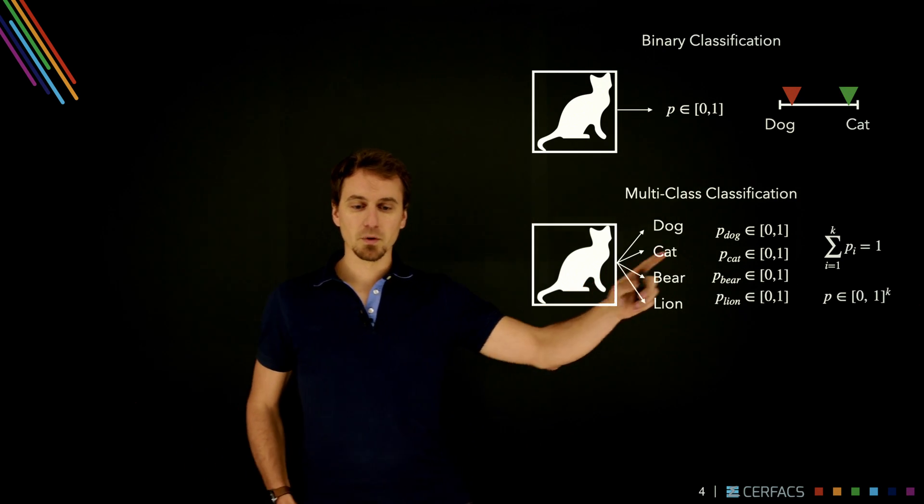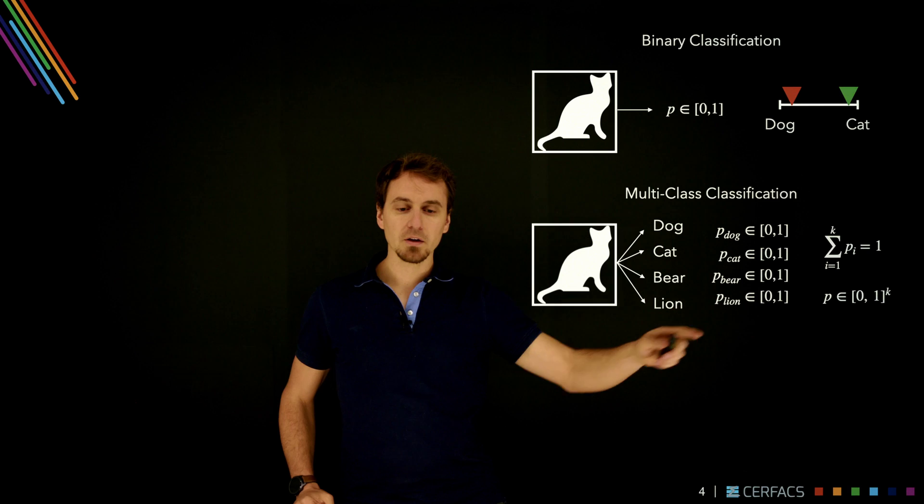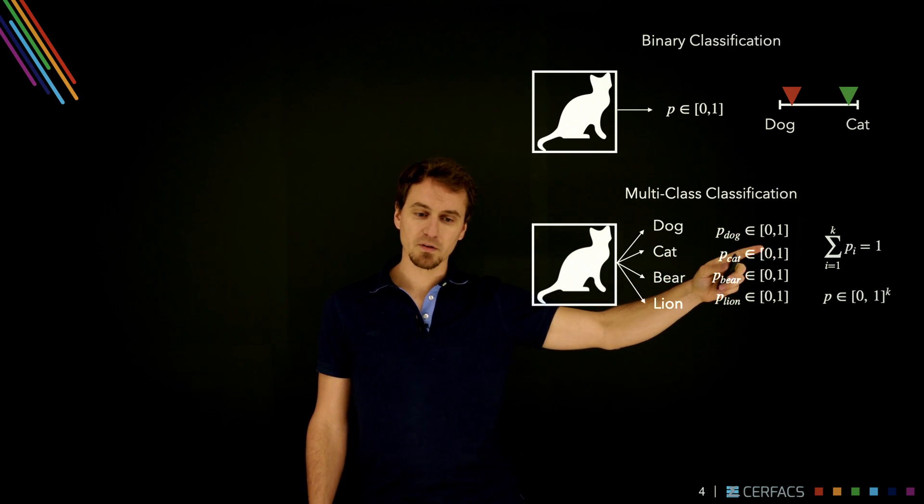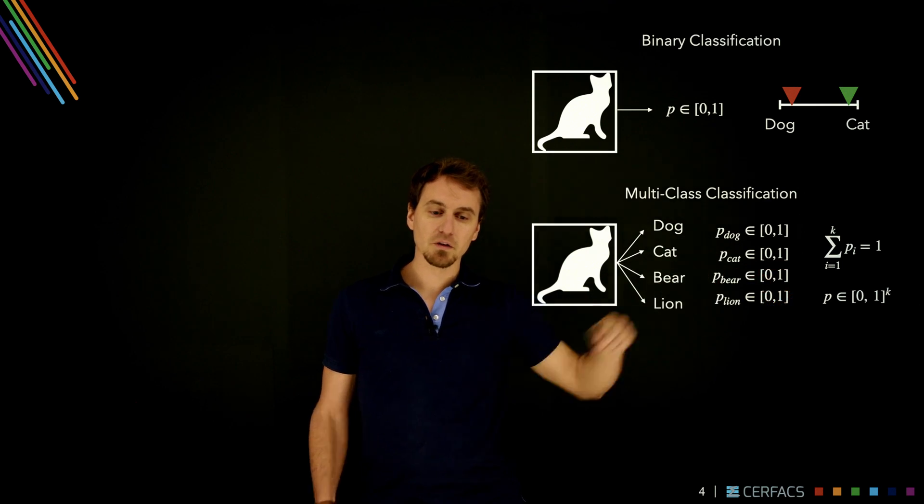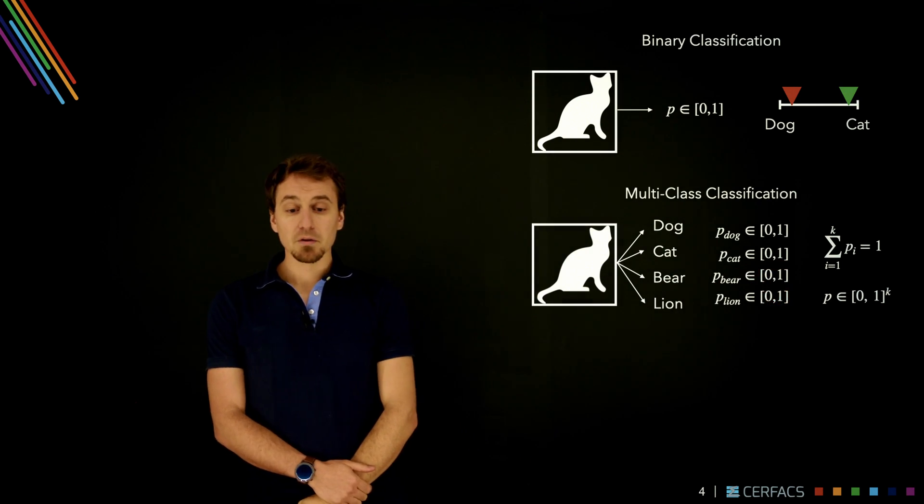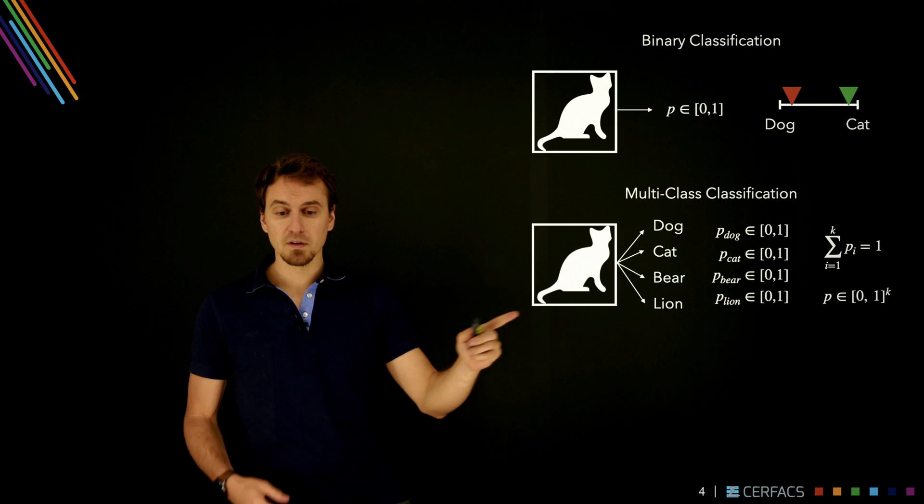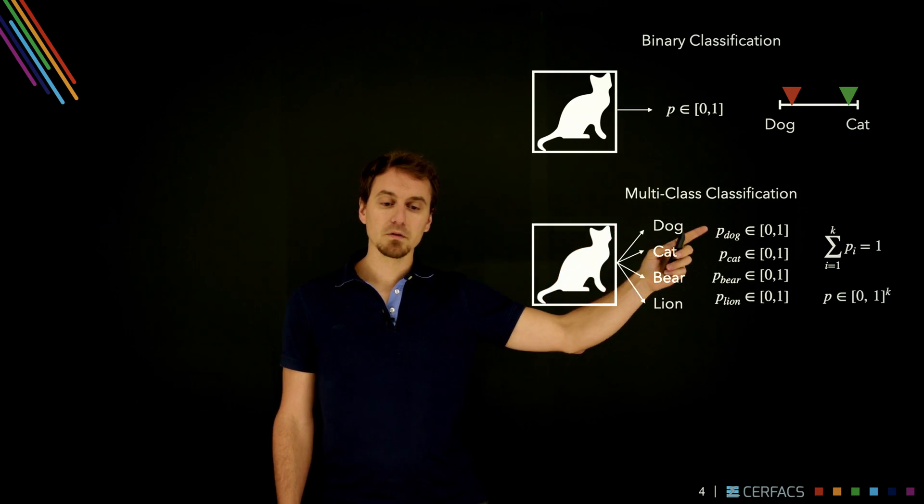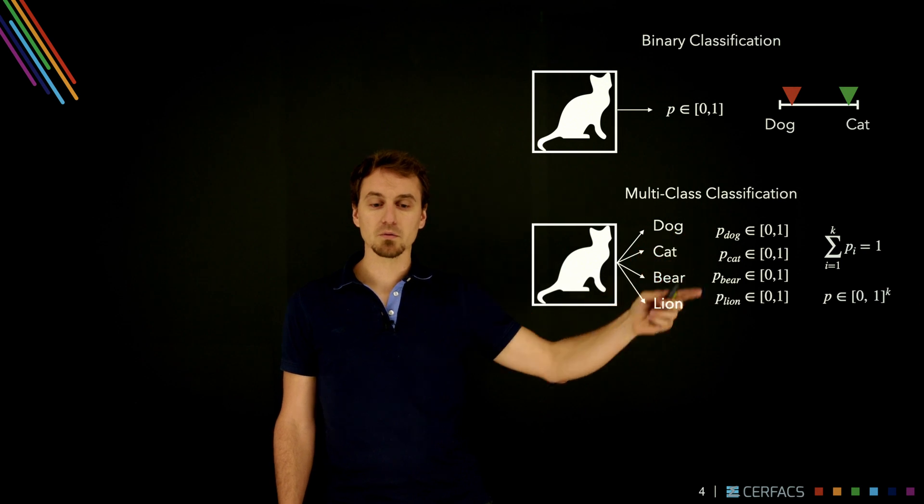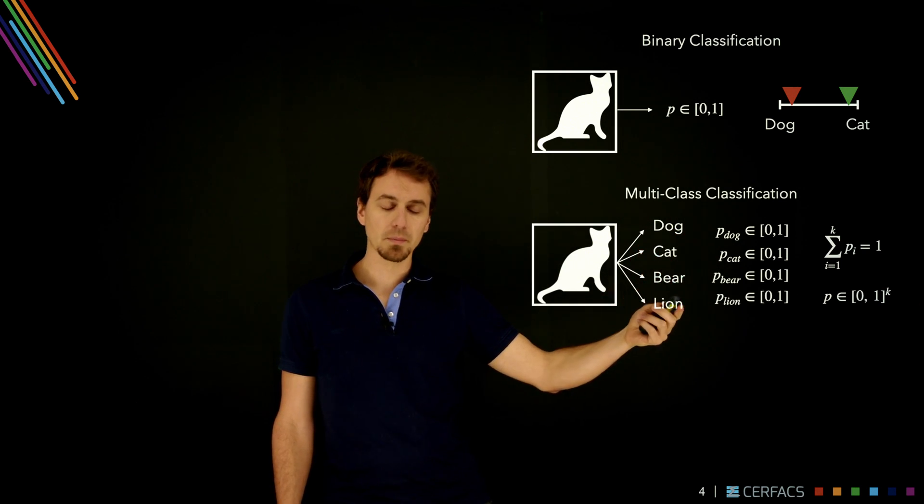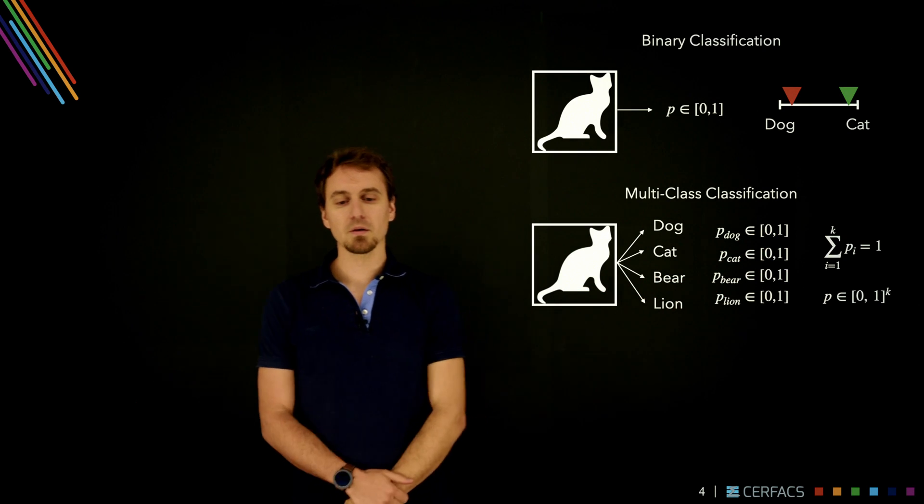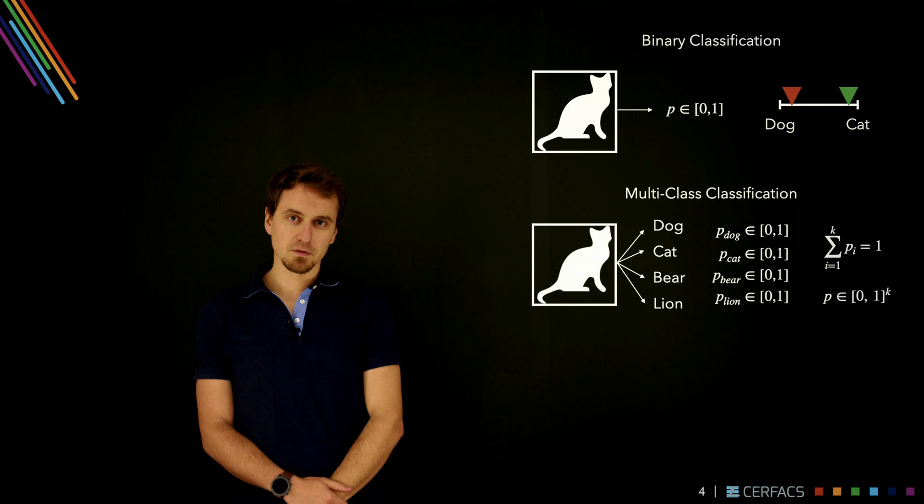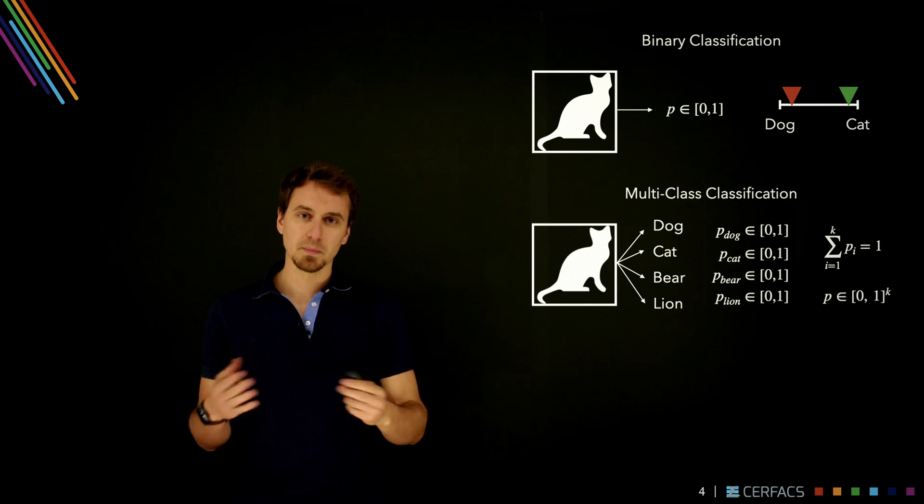Instead, we choose something where we associate one probability to each class. Each of these probabilities will be between 0 and 1 itself, and the total output p is in fact a vector of dimension k. There's a constraint on this because this image can only be associated to one class. So in practice, all of these have to sum to 1. All of these represent a single probability, so the sum of all p's here has to be equal to 1. This is because multi-class classification is one choice between many classes.